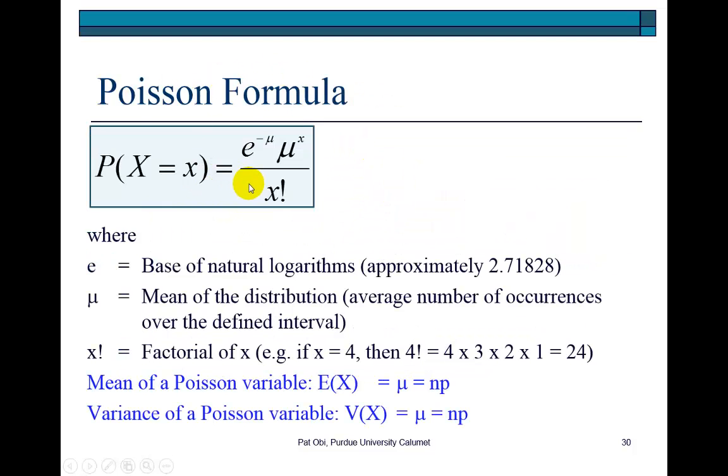Here is the Poisson formula. In this formula, you see this exponential term E, which is the base of natural logarithms with an approximate value of 2.71828. We're going to use a spreadsheet or a calculator to perform the calculations. Mu here is the mean of the distribution, which is the average number of occurrences over the defined interval. The distinction between the Poisson and the binomial is that the Poisson is bounded by time or space interval. And then this is x factorial.